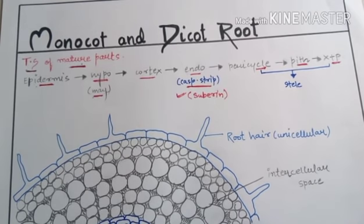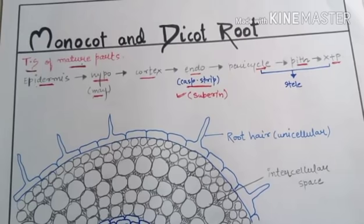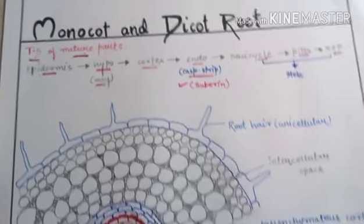So after endodermis, the structures present are pericycle, pith, and vascular bundles — that is xylem and phloem — and these form the stele. This is a very important exam question: what is the composition of stele? The answer includes all the layers inside endodermis. The special property of endodermis is that it has Casparian strips, which are water-repellent and made up of suberin.